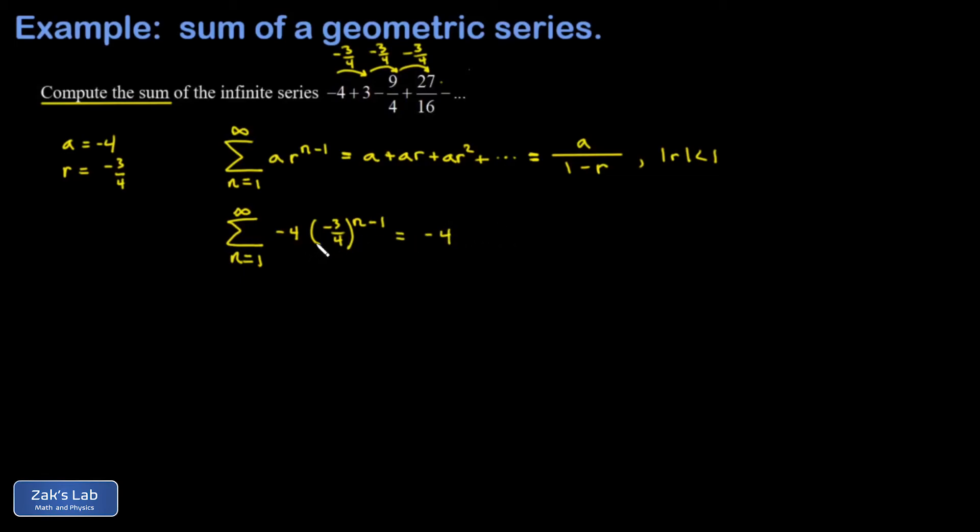Plug in n equals 2, and I get negative 4 times negative 3 fourths to the first. That gives me a positive 3. Plug in n equals 3, and I get negative 4 times negative 3 fourths squared, which is 9 sixteenths. This gives me negative 9 fourths, and so on. So I'm confident that my sigma notation is working.